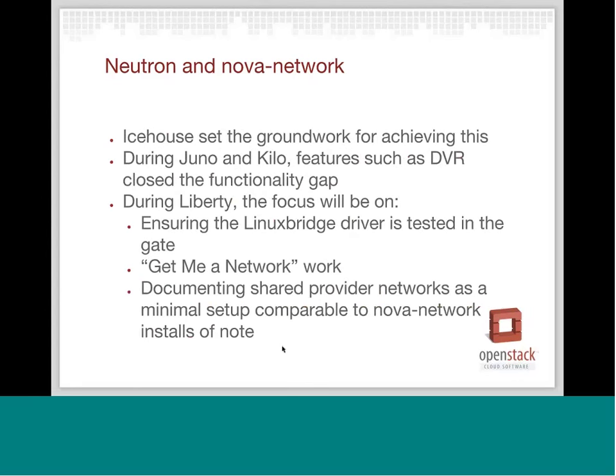Let's start talking about some of the things we're doing in Liberty now with regards to Neutron and Nova Network. As most folks are aware, when Neutron was originally spun up it was actually called Quantum, and it did not start from the Nova Network code base — it started from a fresh code base with a different API as well. Now three or four years down the road, we're getting close to the point where everyone knows we'd like to have a single networking stack. We've been working hard for over a year ensuring we cover all the use cases of Nova Network and looking at migration options. So let's see where we're at in Liberty now.